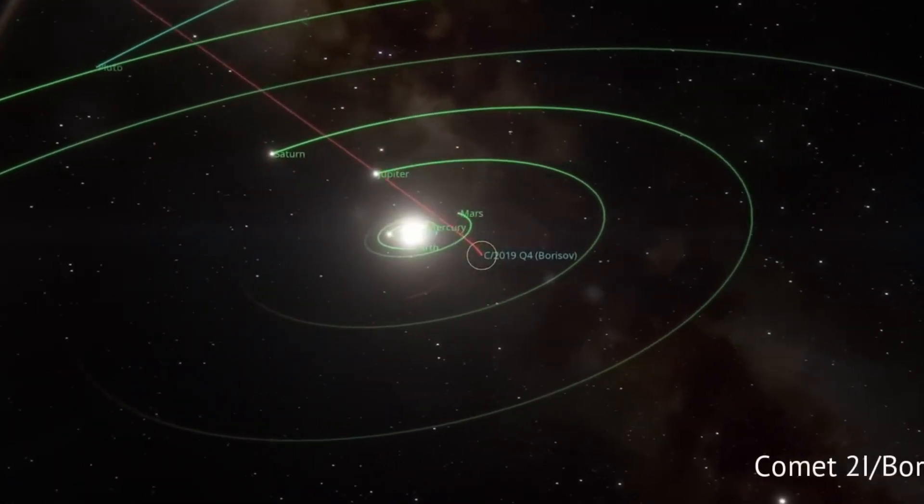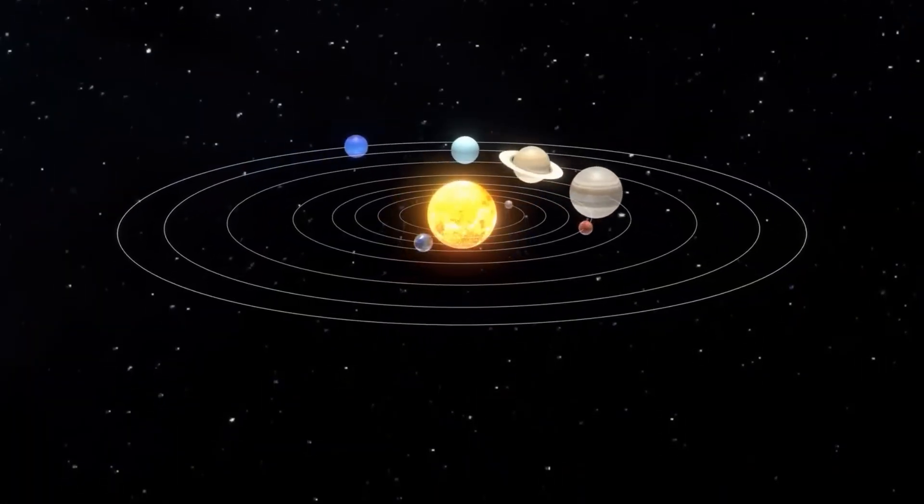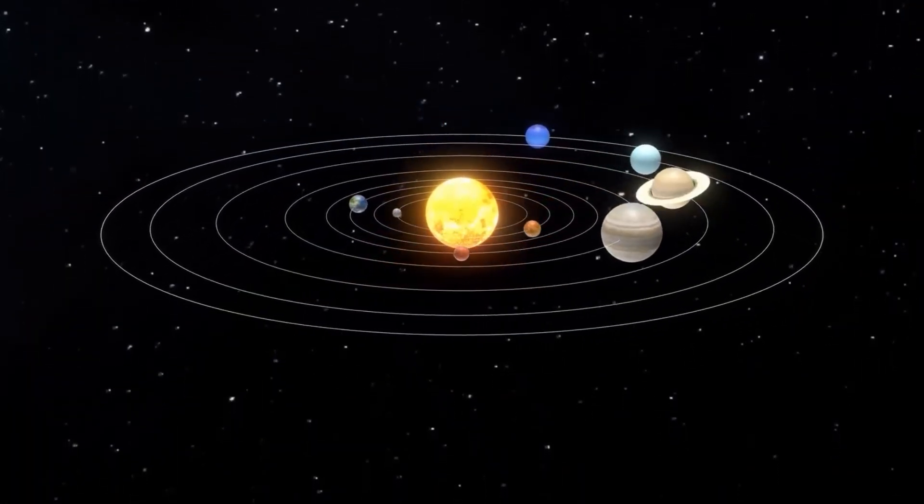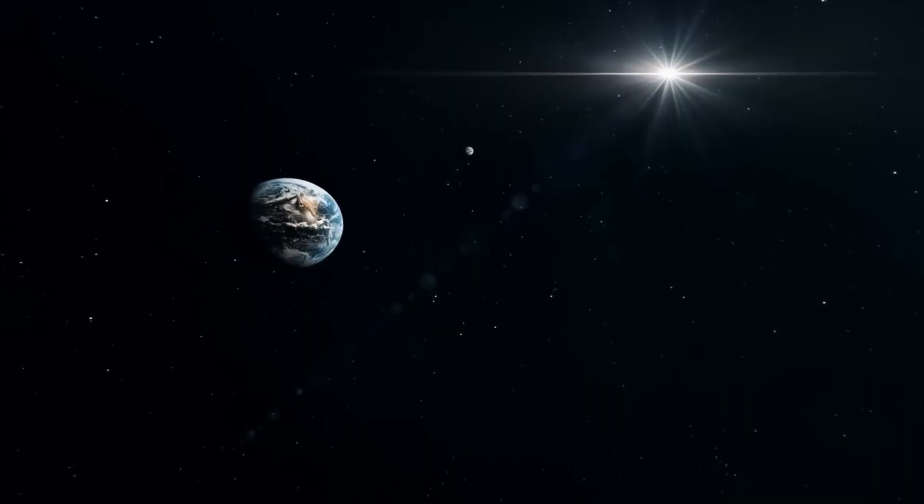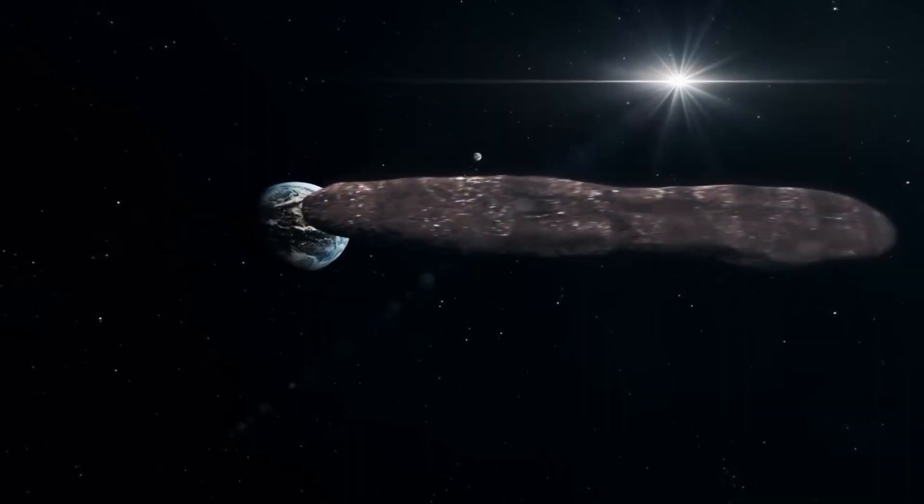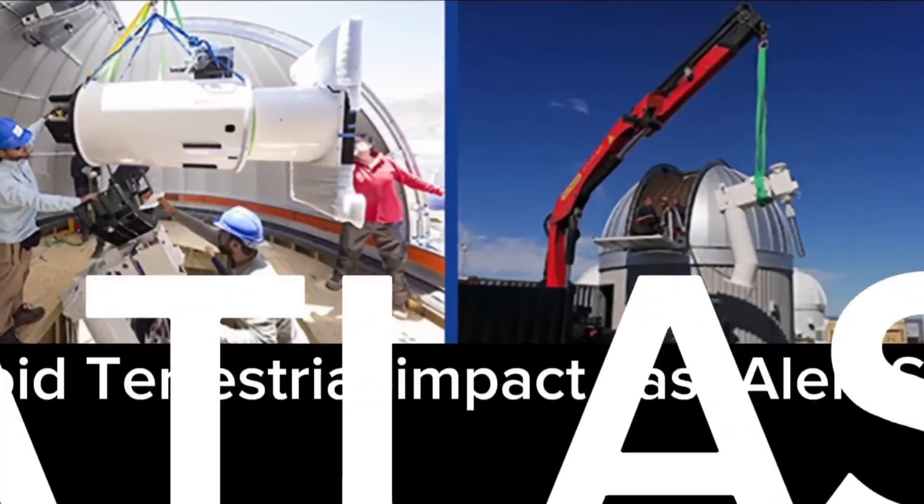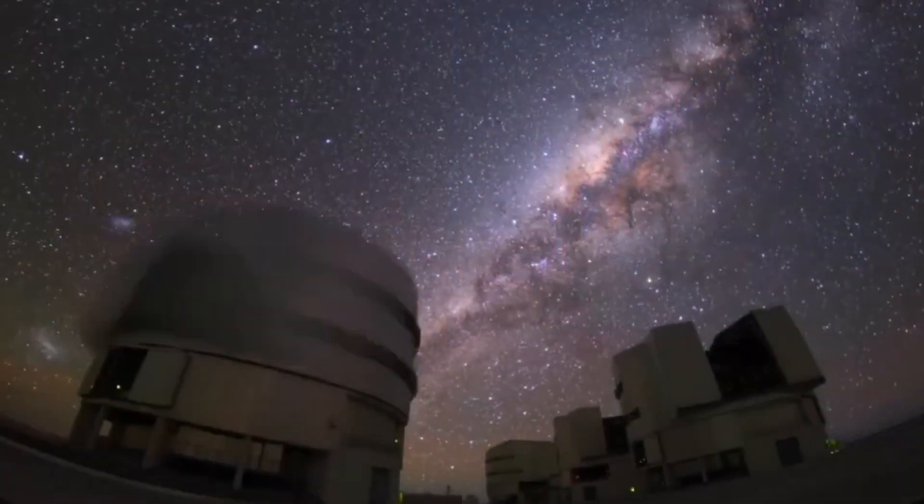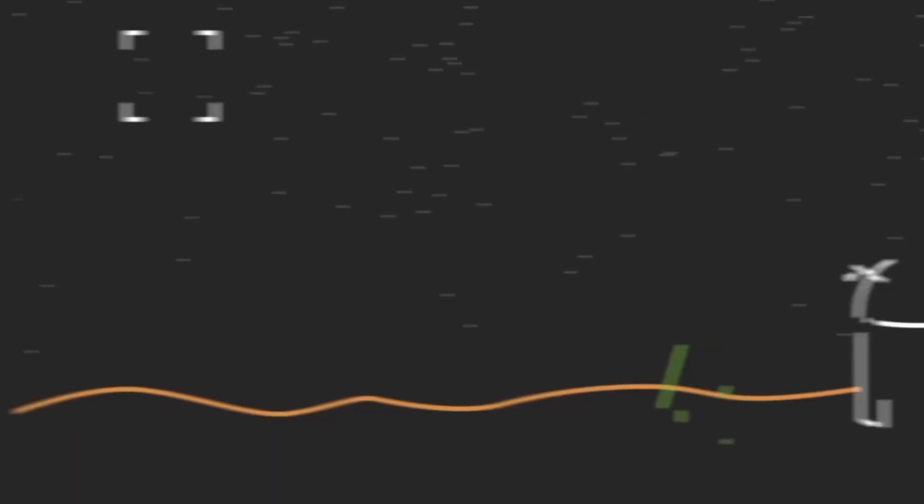The new interstellar object was discovered by the Atlas system, which continuously monitors the sky using powerful telescopes in Hawaii and South Africa. What if 3E Atlas is not just an ordinary piece of rock, but was sent to observe us? Something mysterious is approaching our Earth, and no one knows exactly what it is.